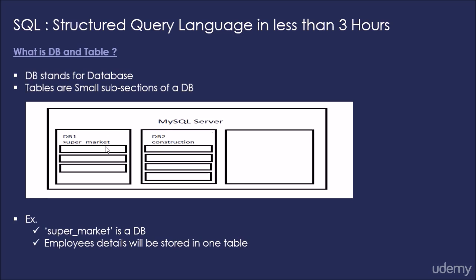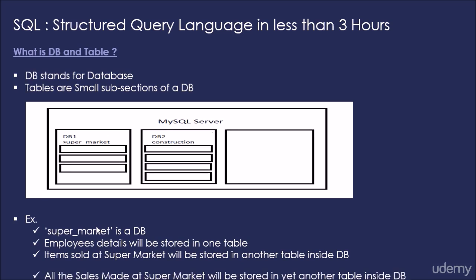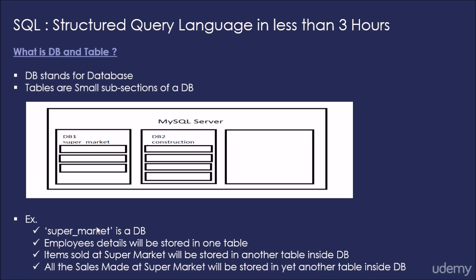Now inside this database we will create three tables. The first table will be table employees where we will be storing all the data regarding the employees working at the supermarket. The second table which we will be creating inside the database supermarket will be a table called items where we will store all the details regarding the items being sold at the supermarket. And the third table is table sales where we will store details regarding all the sales being made inside the supermarket.